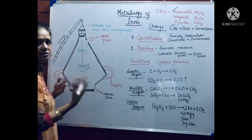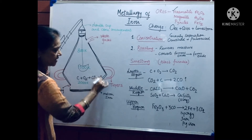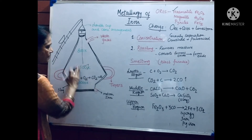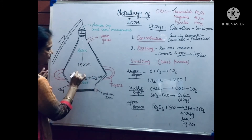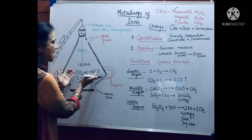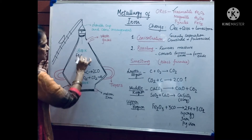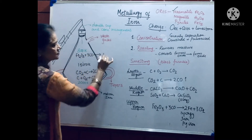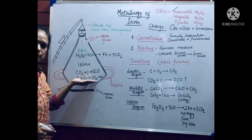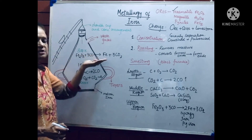Coke — which is coal — falls to the bottom. The first reaction is: carbon plus oxygen gives carbon dioxide. This is an exothermic reaction, meaning heat is produced. Carbon dioxide is a gas, so it rises up and combines with more coke to form carbon monoxide. This carbon monoxide then comes in contact with the ore, Fe₂O₃. At the uppermost part of the furnace: Fe₂O₃ plus CO gives iron plus CO₂. Carbon monoxide rises up, combines with ferric oxide, and reduces it to iron.